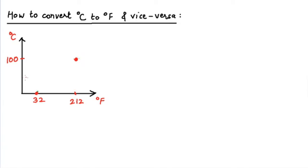The degrees Celsius and degrees Fahrenheit scales have been defined such that the graph of degrees Celsius versus degrees Fahrenheit temperature is a straight line. So when I complete this graph, I draw a line passing through these two known points.